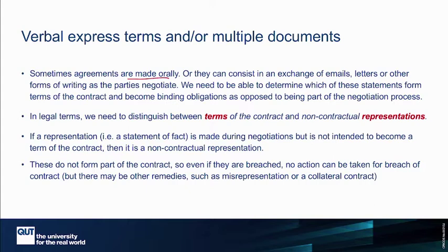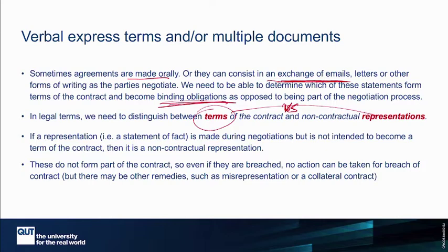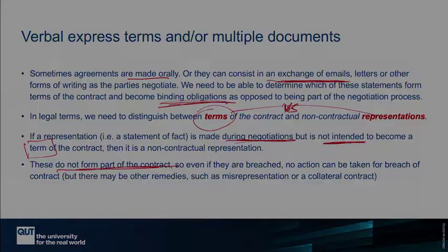Sometimes agreements are made orally, or they're an exchange of documents like emails, letters, or other forms of writing. We need to work out which of these statements are binding versus non-binding — in other words, we need to distinguish terms from representations. A representation is something said during negotiations but not intended to become a term of the contract; it doesn't form part of the contract.